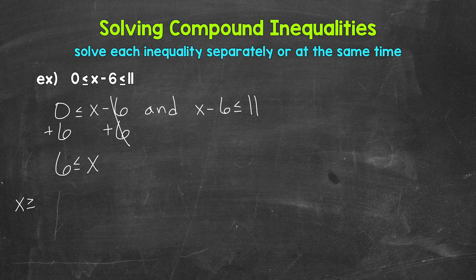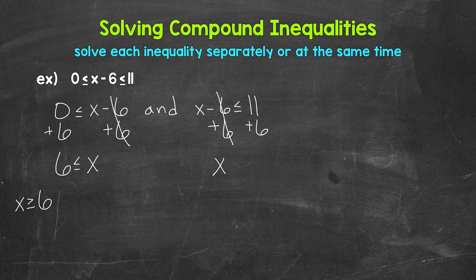Now we need to solve x minus 6 is less than or equal to 11. Let's isolate x by adding 6 to the left side, which means we need to add 6 to the right side as well. The 6s on the left cancel each other out, so x is now isolated. We get x is less than or equal to 11 plus 6, which gives us 17. So x is less than or equal to 17, and we're done solving our two inequalities.